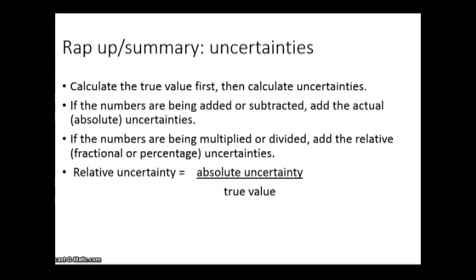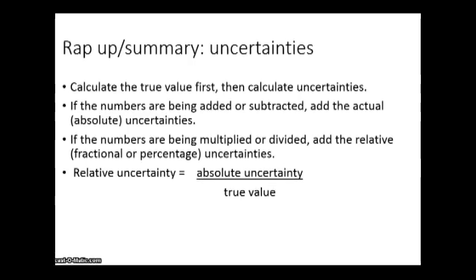If the numbers are being added or subtracted, add the actual and absolute uncertainties. If the numbers are being multiplied or divided, add the relative, fractional, or percentage uncertainties. So to find the relative uncertainty, you need the absolute uncertainty divided by the true value.